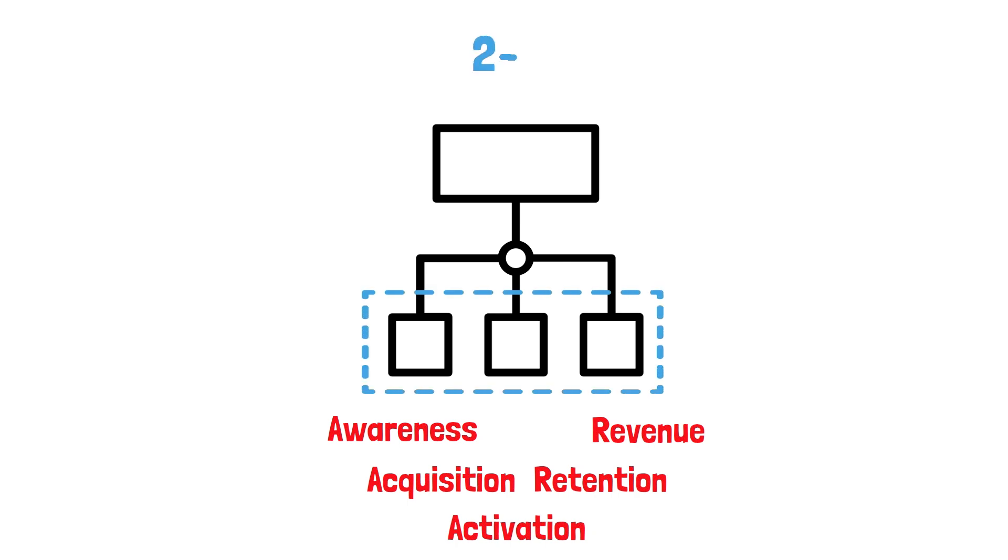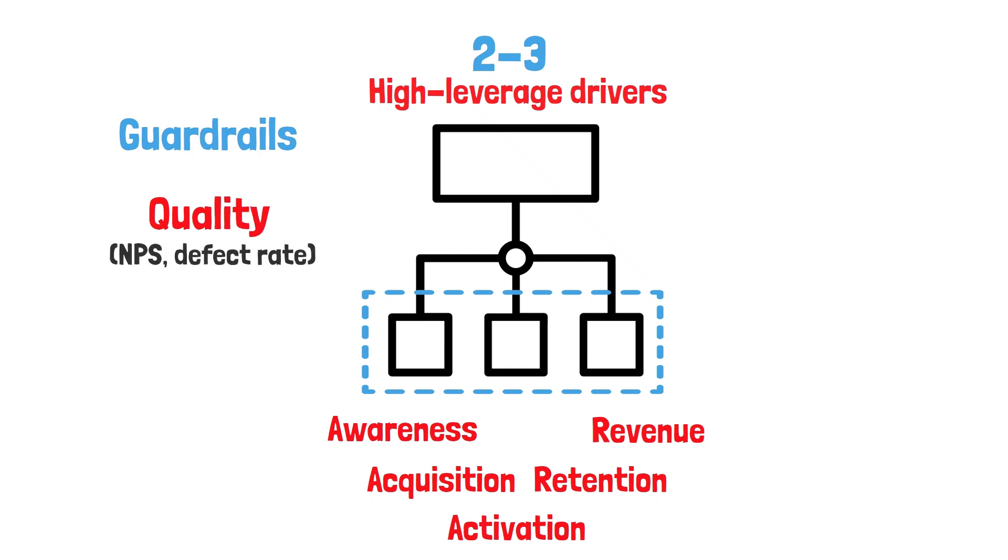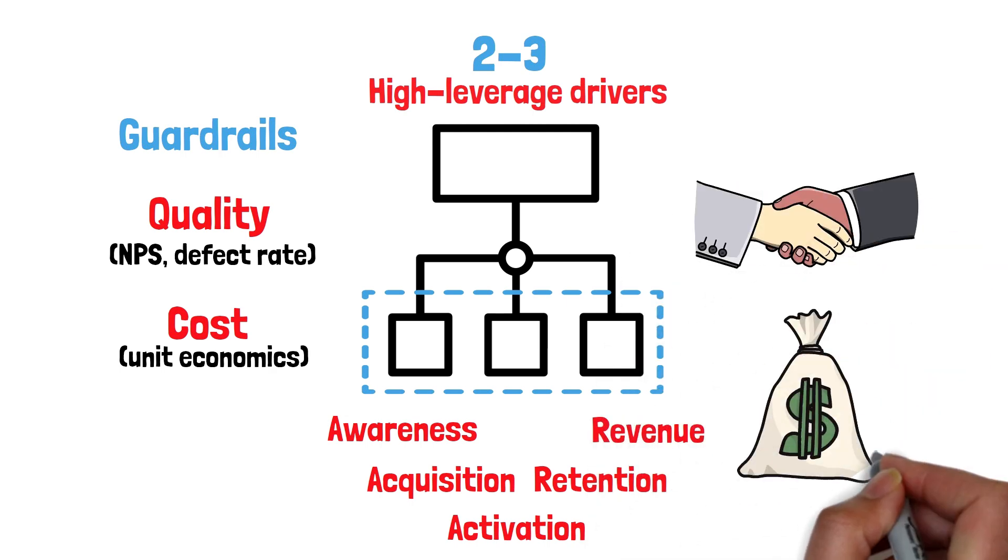Under each branch, list two to three high-leverage drivers. Add guardrails for quality, NPS, defect rate, and cost, unit economics, so you don't win the north star by eroding trust or margin.